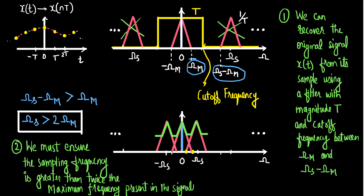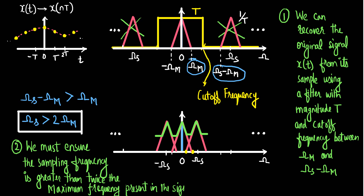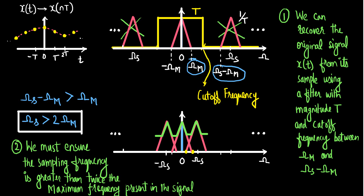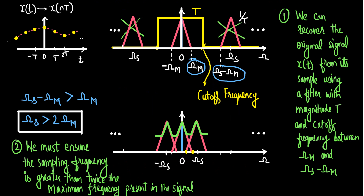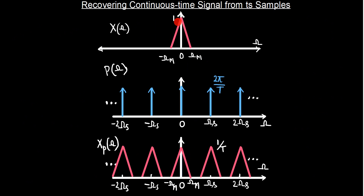If these two conditions are satisfied, then only we can ensure the original signal is recovered. To summarize: we had the original signal X whose spectrum had maximum frequency ωm. After sampling, we have replicas of the original spectrum at every integer multiple of ωs in the Fourier domain.